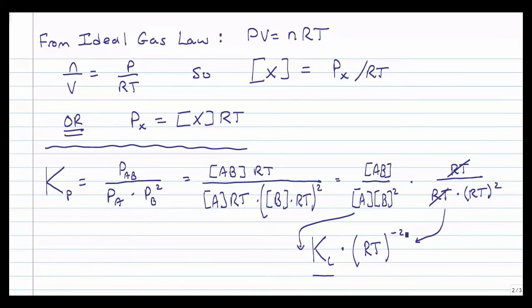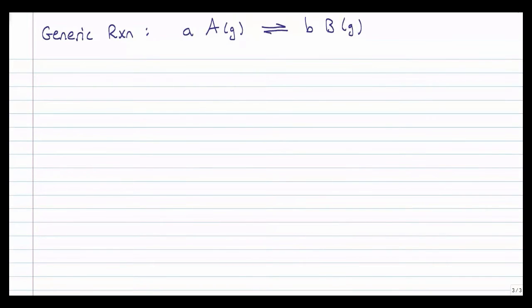So that's fine and dandy. We know how to do it for this one, but why do we need to go through this whole mess every time? Let's instead look at a generic reaction. Here's a generic reaction where lowercase a is the stoichiometric coefficient of the substance A, and lowercase b is the stoichiometric coefficient of the substance B. We can write K sub P again. That's going to be the pressure of B raised to the b divided by the pressure of A raised to its stoichiometric coefficient a.